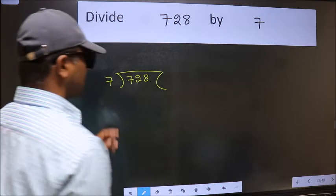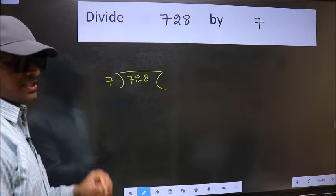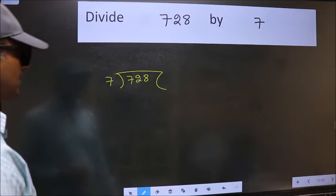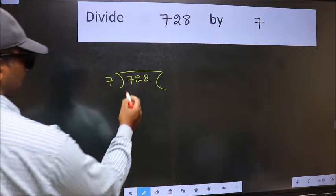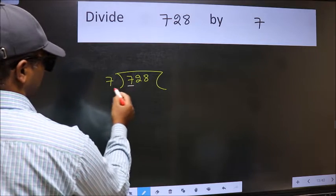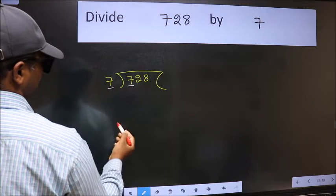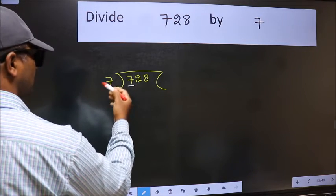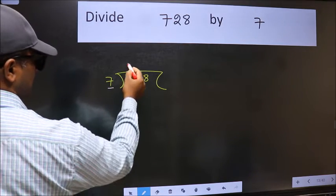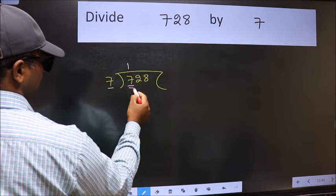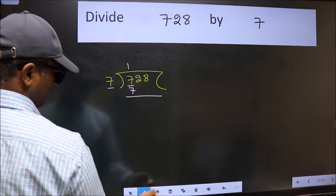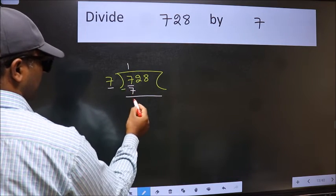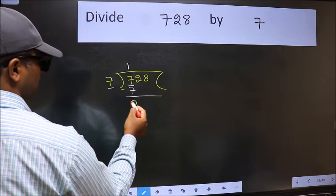This is your step 1. Here we have 7 and here 7. When do we get 7 in the 7 table? 7 ones are 7. Now we should subtract. We get 0.